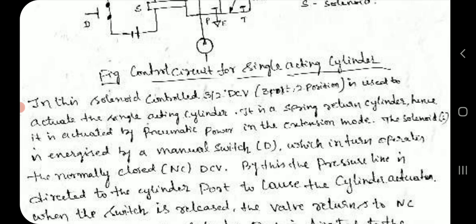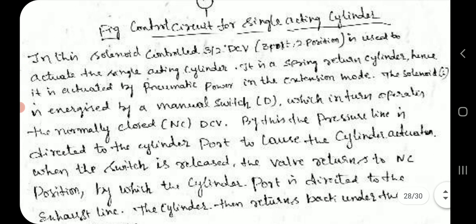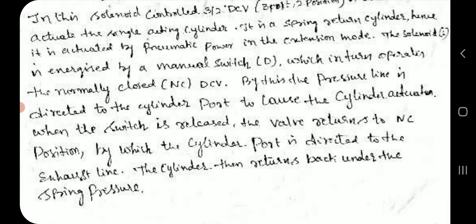Control circuit for a single-acting cylinder: A solenoid-controlled 3/2 direction control valve (three-port, two-position) is used to actuate the single-acting cylinder. It is a spring-return cylinder, so it is actuated by pneumatic power in the extension mode. The solenoid is energized by a manual switch, which in turn operates the normally closed direction control valve, directing the pressure line to the cylinder port to cause actuation.